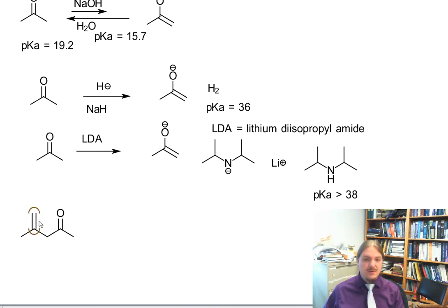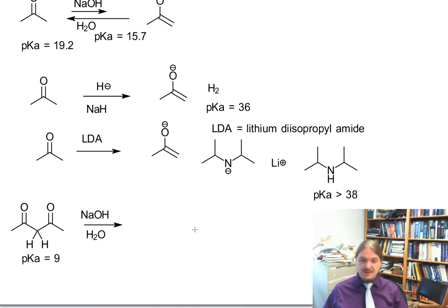I just want to do one further example. I want to use a molecule where you have a diketone and you have hydrogen atoms in between two carbonyl groups. The pKa of this compound is 9, and so this is a big difference. In this case, we can use sodium hydroxide in water, where water's pKa is 15.7. So we're 6.7 pKa units higher, which means the equilibrium constant is going to be 10 to the 7 in favor of the enolate.